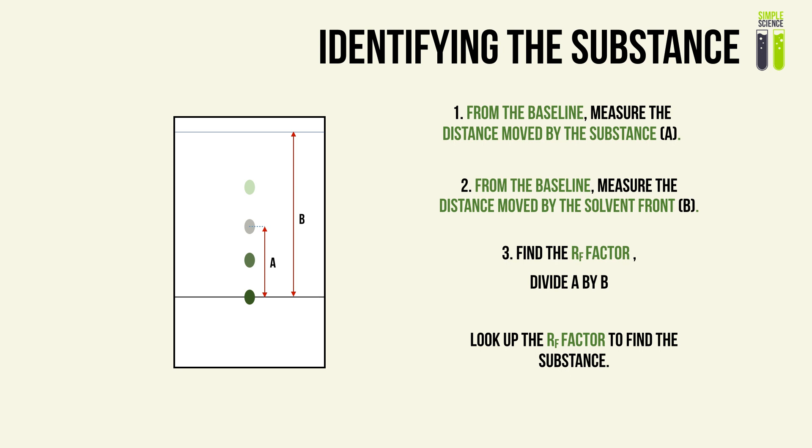This gives us the RF value. The same substance will always have the same RF value, so we look it up in standard tables. By comparing our calculated RF value to the theoretical values, if they are similar or exactly the same, we can identify the substance itself.